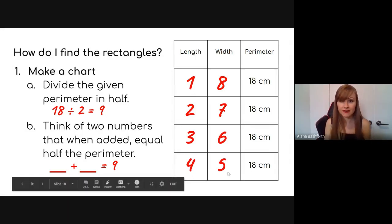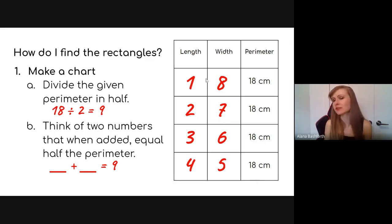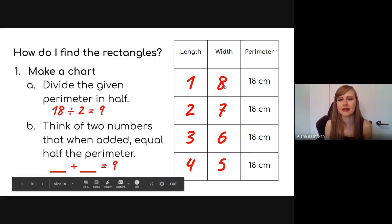You'll notice that if you do the chart this way, it's going to go one, two, three, four, five, six, seven, eight. You're going to stop the chart when either the numbers are one away from each other or they're exactly the same.